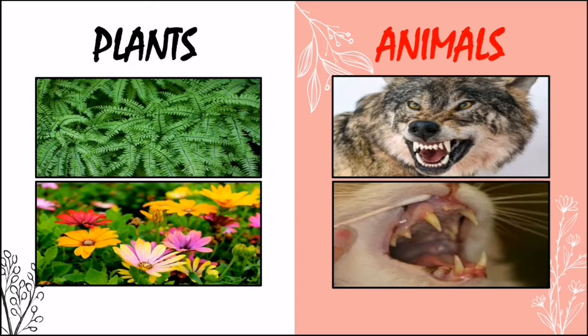Their teeth are pointed and sharp, adapted for stabbing or tearing animal flesh. Some animals such as insects, small mammals, and humans are omnivores that eat both plants and animals. You can determine whether an organism is a herbivore, omnivore, or carnivore depending on the teeth that they have — whether they have flat teeth, incisors, canines, and so on.